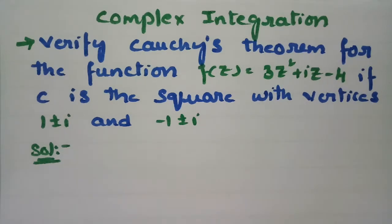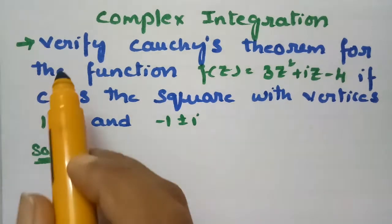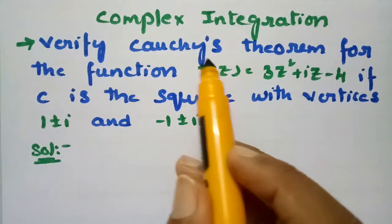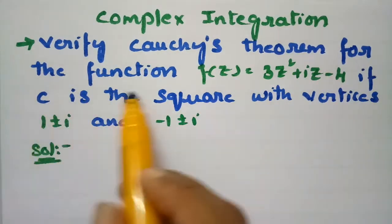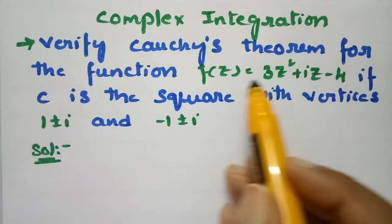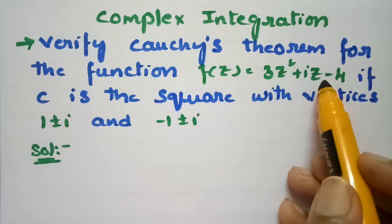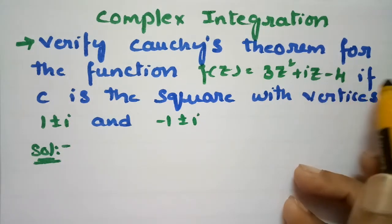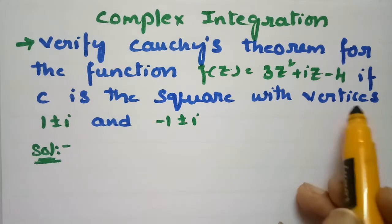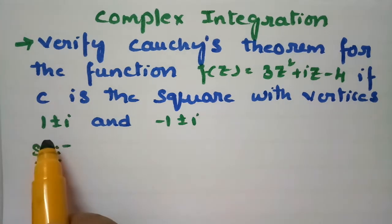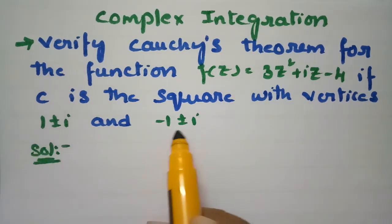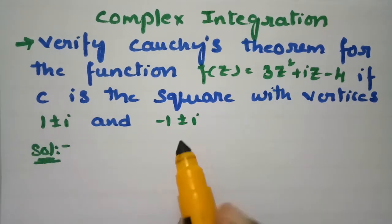In this video I am going to give a solution for the most important problem from complex integration. I am going to verify Cauchy's theorem for the function f(z) = 3z² + iz - 4, where c is the square with vertices 1 ± i and -1 ± i.